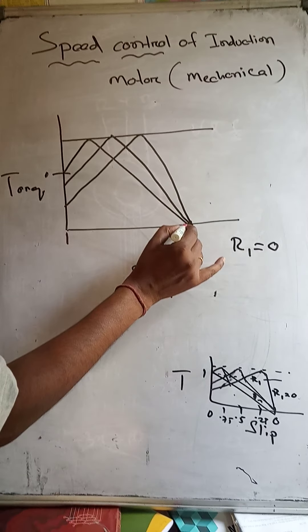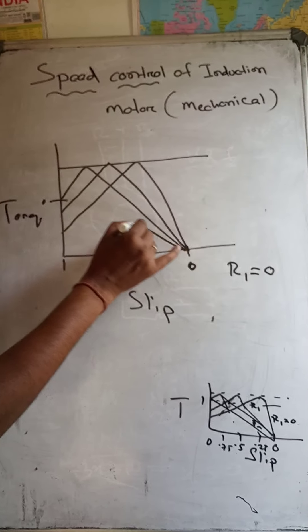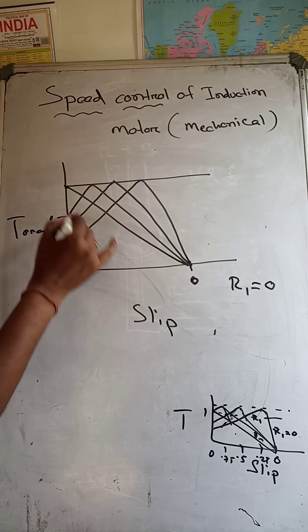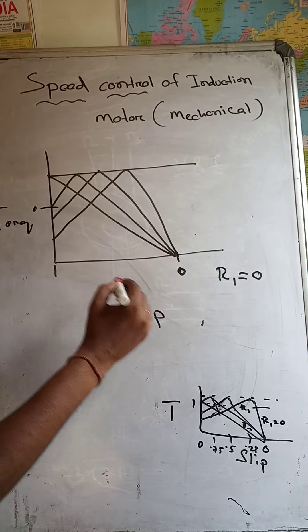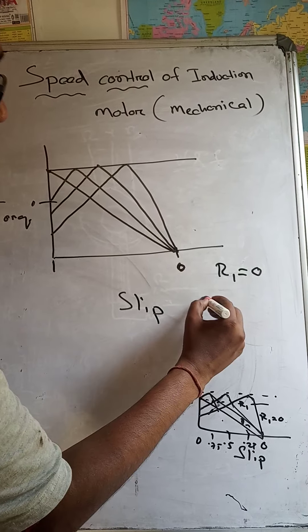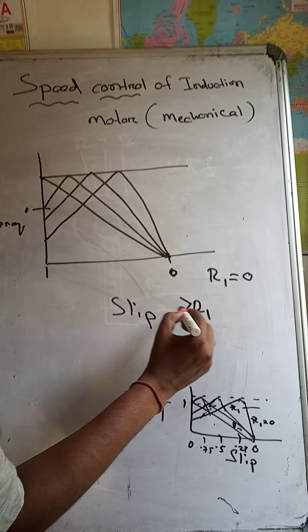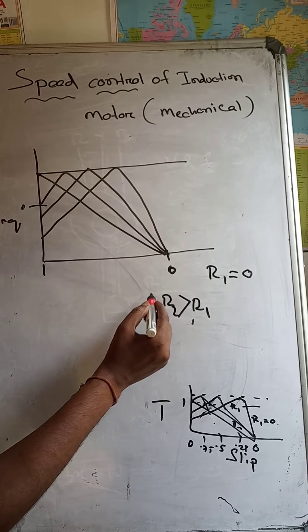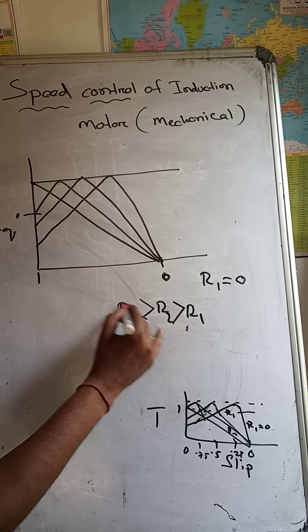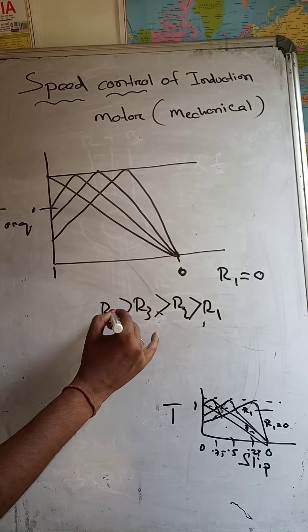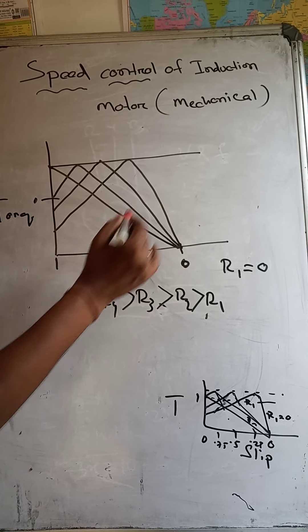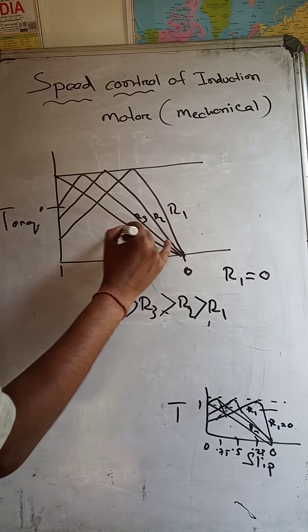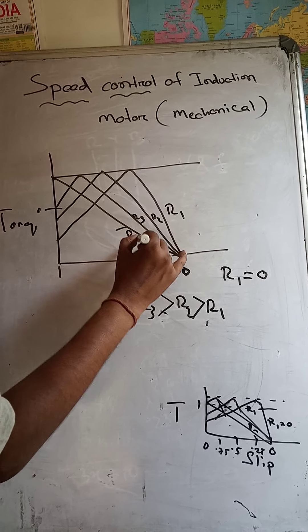If you add maximum resistance, the torque will be zero. From this, R1 is greater than R2, which is greater than R3, which is greater than R4. The curves correspond to R1, R2, R3, and R4 respectively on the torque-slip diagram.